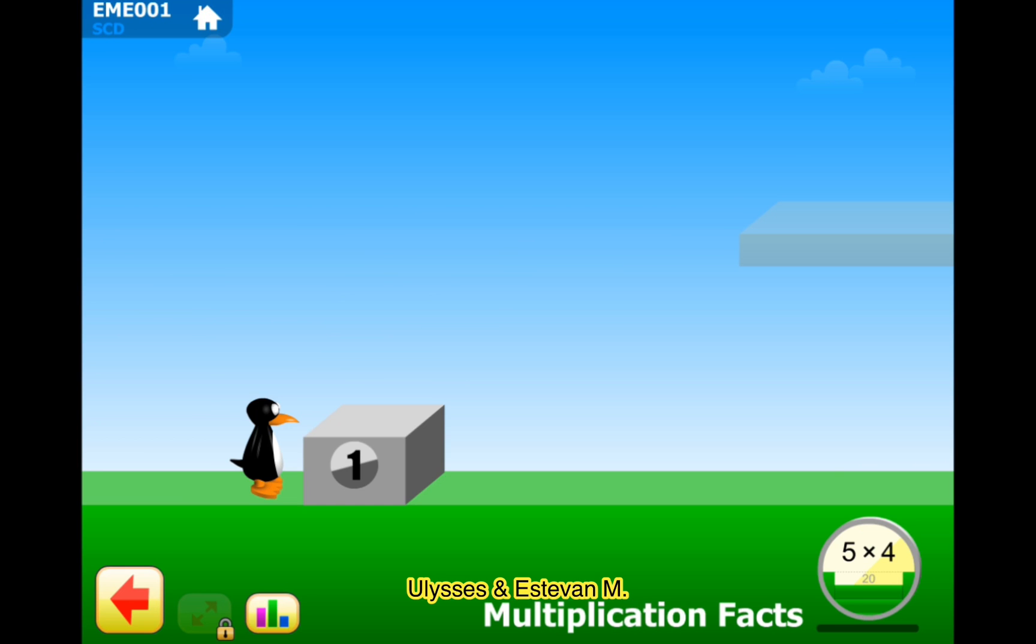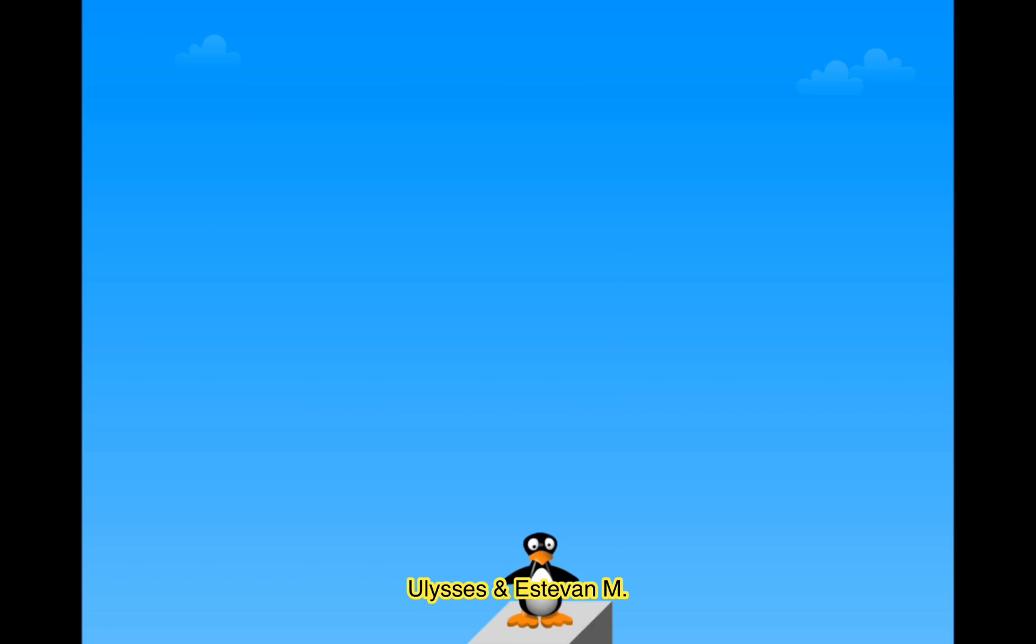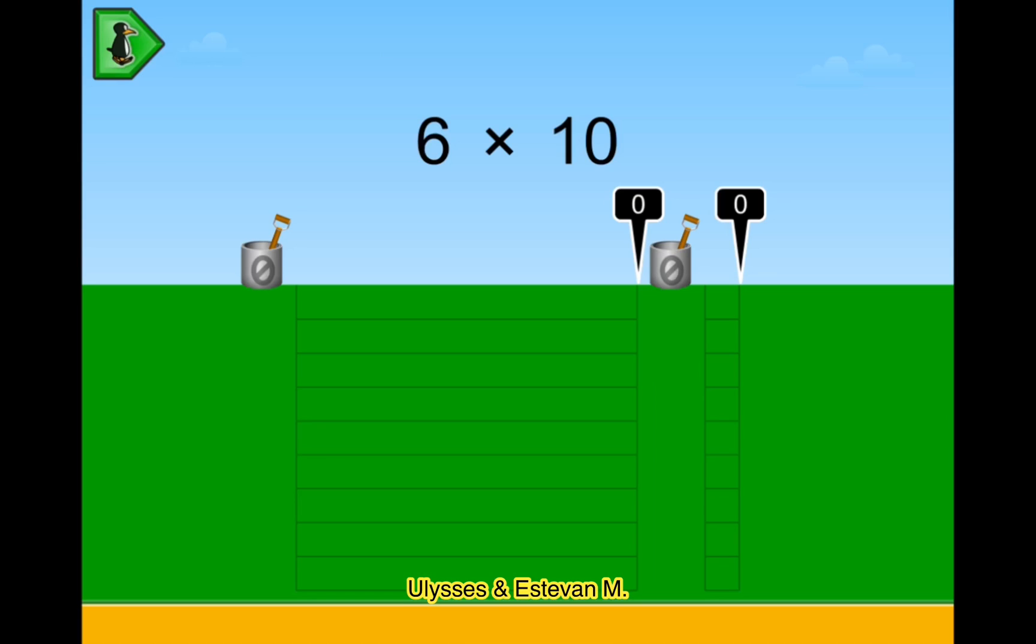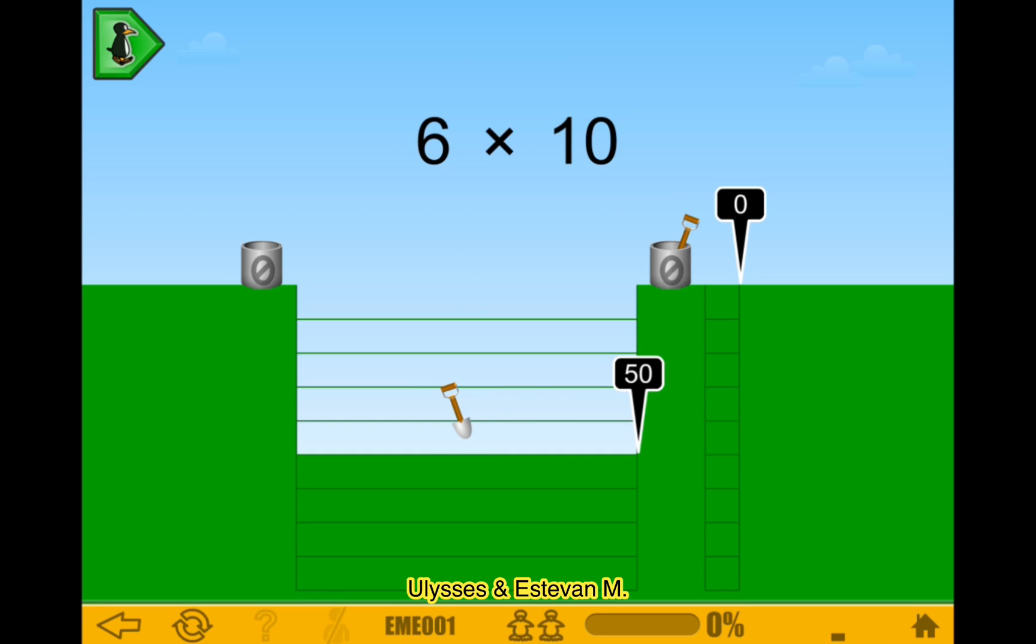Multiplication Facts Level 1. Whoa, oh. 6 times 10 is 60. So much is just like 60 and then it runs to zero.